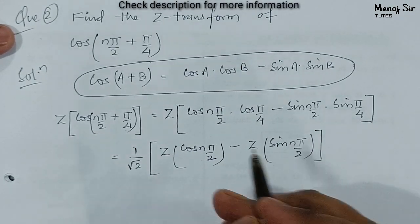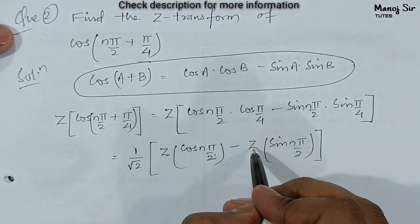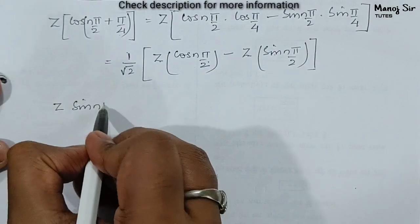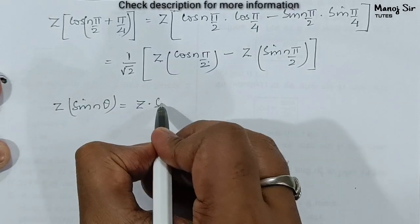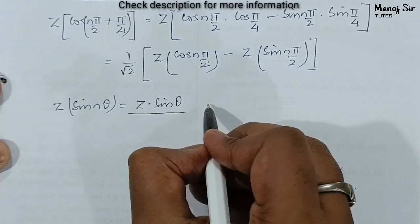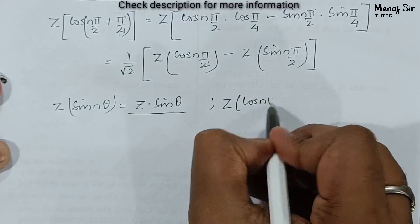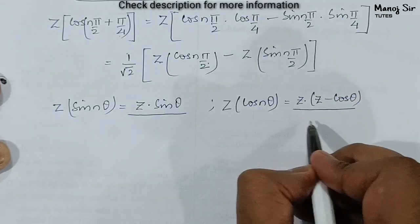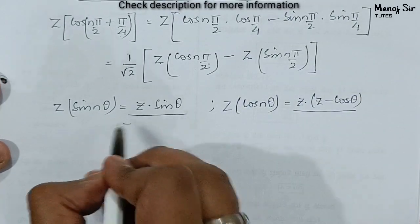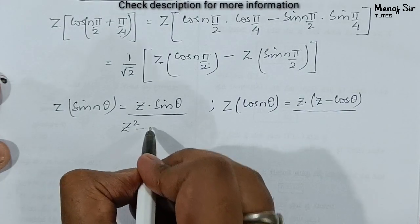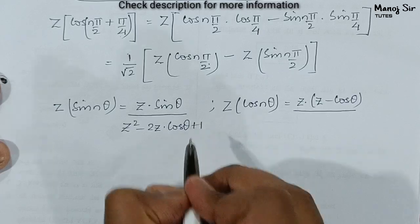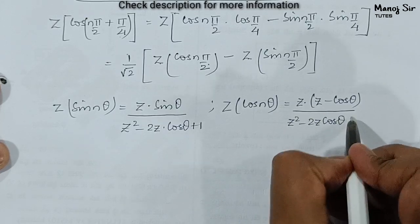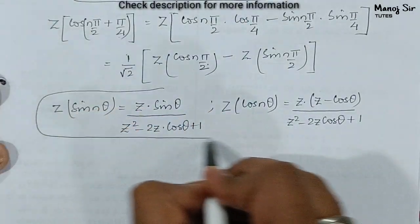We must remember the formulas: Z transform of sin(nθ) = Z·sin(θ) / (Z² − 2Z·cos(θ) + 1), and Z transform of cos(nθ) = Z·(Z − cos(θ)) / (Z² − 2Z·cos(θ) + 1). Note that the denominator is the same in both cases: Z² − 2Z·cos(θ) + 1.